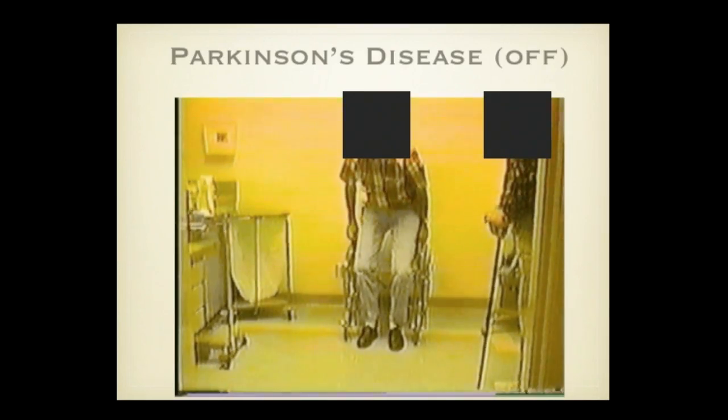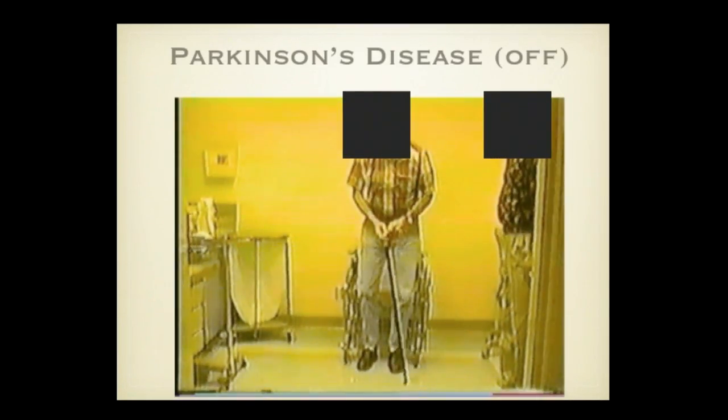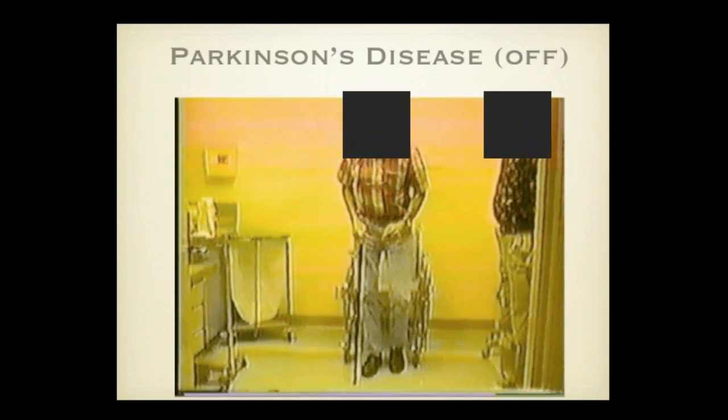This is a patient from many years ago who had all the classic features. This is 'off' — meaning we held their medication for at least 12 hours. You can see he's asymmetric, with a rest tremor more on the left than on the right. He's slow — this is real time. He's got a masked face and has problems standing, stooped over and very slow. He's a classic case; he was another young onset patient. When he walks, he shakes — almost everybody who shakes like that when they walk has got Parkinson's disease. It's a very specific sign.